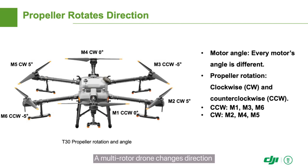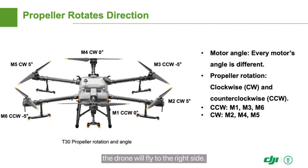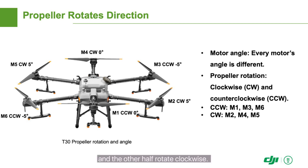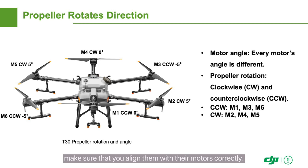A multi-rotor drone changes direction by changing the speed of its different motors. For example, if the speed of the left motor is higher, the drone will fly to the right side. Usually, half of the drone's propellers rotate counterclockwise, and the other half rotate clockwise. Accordingly, propellers are divided into CCW and CW propellers. Before installing propellers, make sure that you align them with their motors correctly.